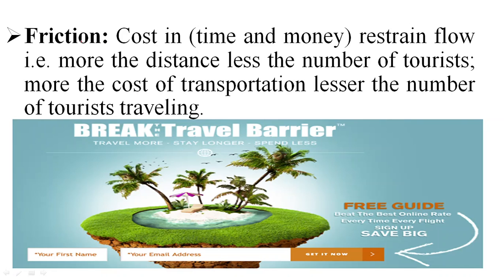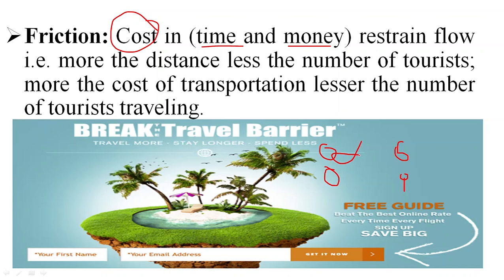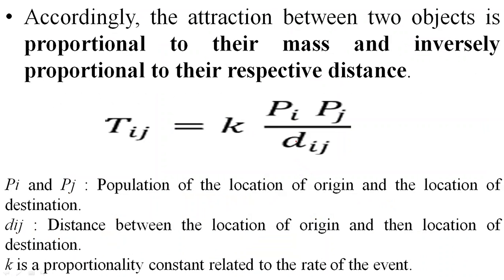The second concept is friction — something that restrains tourism activities. Friction includes cost in terms of time and money. More time and more money means more cost, which results in less travel. So tourism is inversely proportional to friction: one thing increases, the other decreases. This gives us the concepts of directly proportional and inversely proportional as applied to travel patterns.